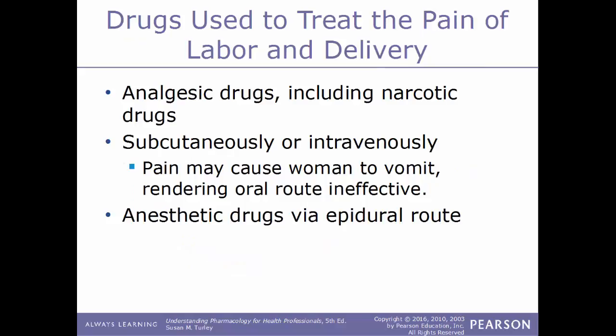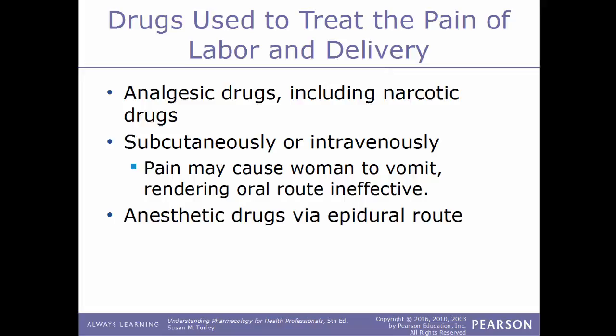Drugs used to treat the pain of labor and delivery include analgesic drugs including narcotic drugs. These can be given either subcutaneously or intravenously — these routes are preferable because the pain of labor and delivery can cause a woman to vomit, making an oral route of administration ineffective. Drugs used to treat pain for labor and delivery can also be anesthetic drugs given via an epidural route.